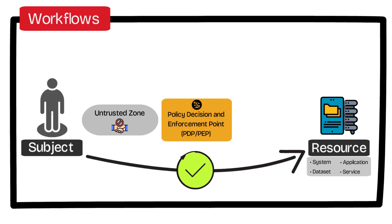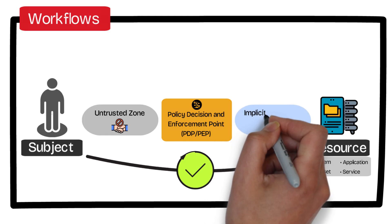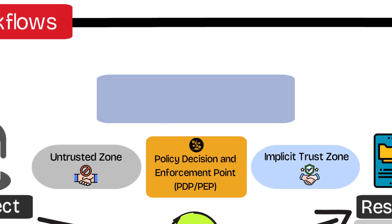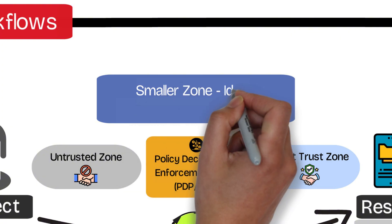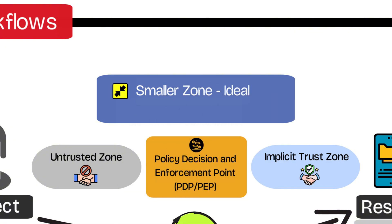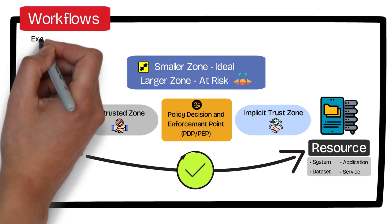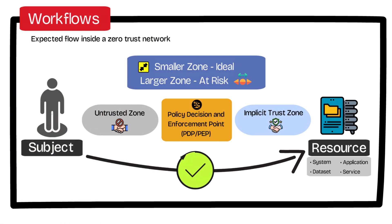The PDP-PEP component is placed as close to the resource as possible, creating an implicit trust zone, which represents the area where all entities are trusted to at least the given resource. Ideally, the implicit trust zone is as small as possible, and trust is applied specifically to the resource. The larger the implicit trust zone is, the more risk that a compromised system can lead to lateral movement and compromise other systems. This flow represents a zero trust architectural flow for every single request that occurs on a network, and later in the video we'll break down this flow into individual components and technologies.